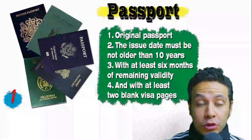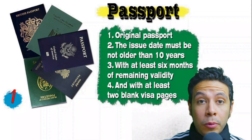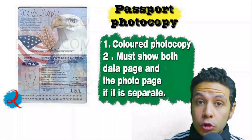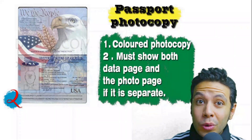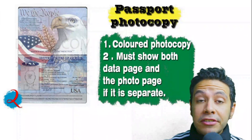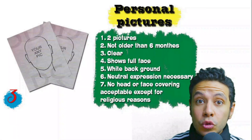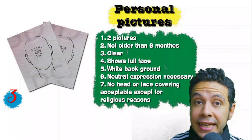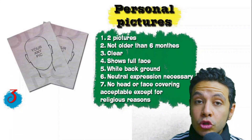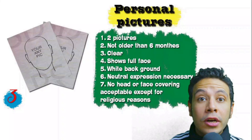Regarding required documents: your passport must be original, not older than 10 years, with at least six months of remaining validity and at least two blank visa pages for stamps. You will also need a photocopy — one copy or more, preferably colored — with both the data page and photo page showing. For personal pictures, you need at least two new photos (not older than six months), clear, showing your full face, preferably with a white background and a neutral expression. No head or face covering is acceptable except for religious reasons.